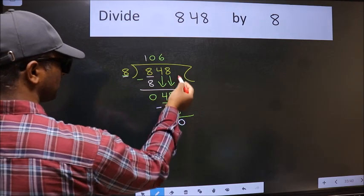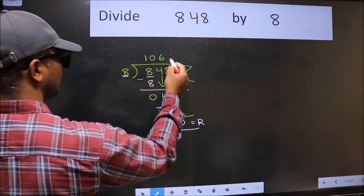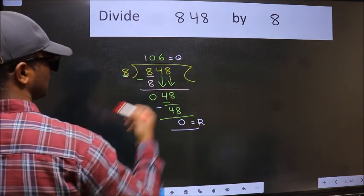No more numbers to bring it down, so we stop here. This is our remainder and this is our quotient.